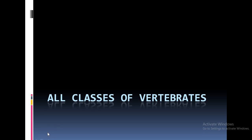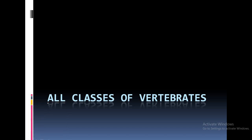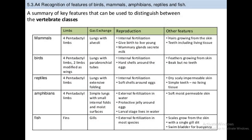Good morning students. Today we have to discuss about all the classes of vertebrates. In the previous class we have already discussed about the features of the vertebrates, so let's start with the classes of vertebrates. Vertebrates are divided into five classes: Pisces (fishes), Amphibia, Reptilia, Aves, and Mammals.